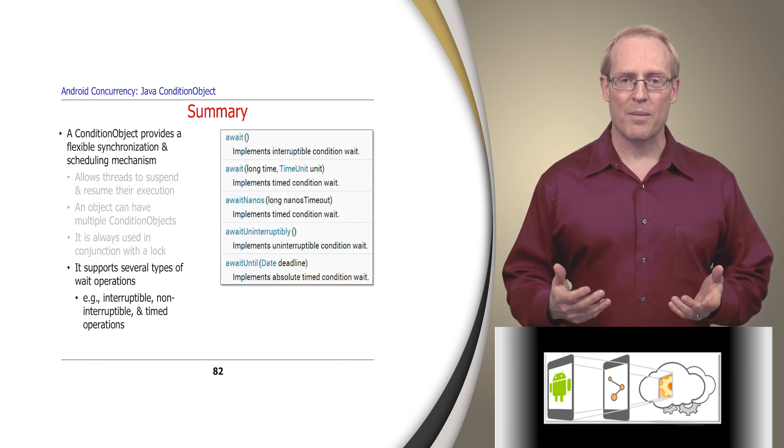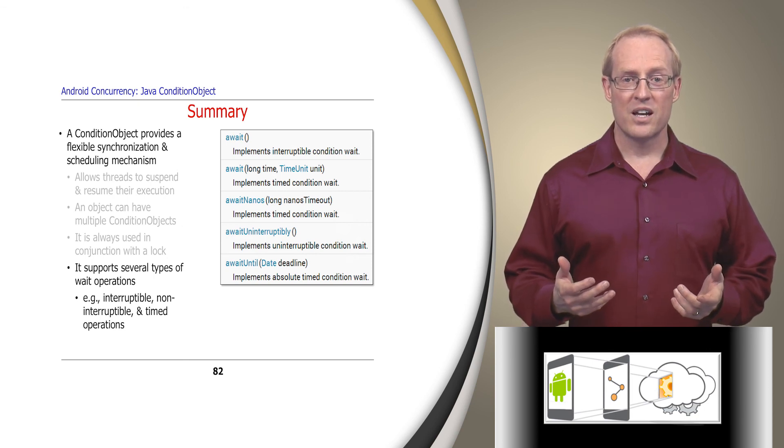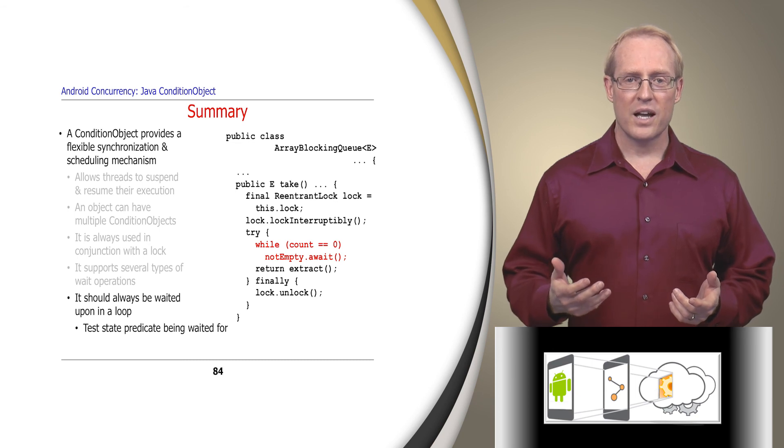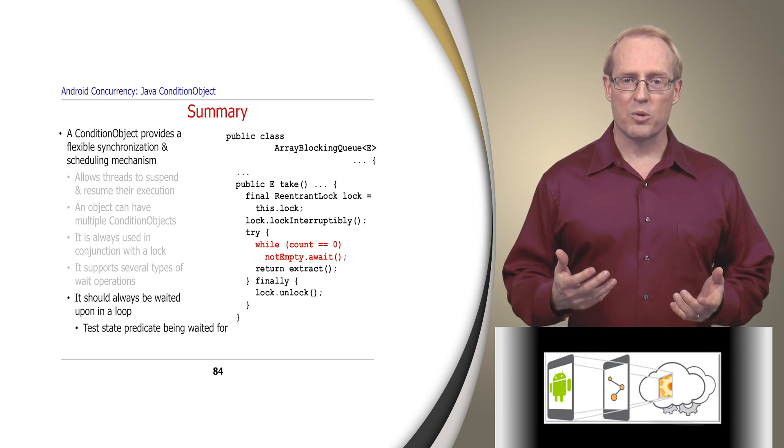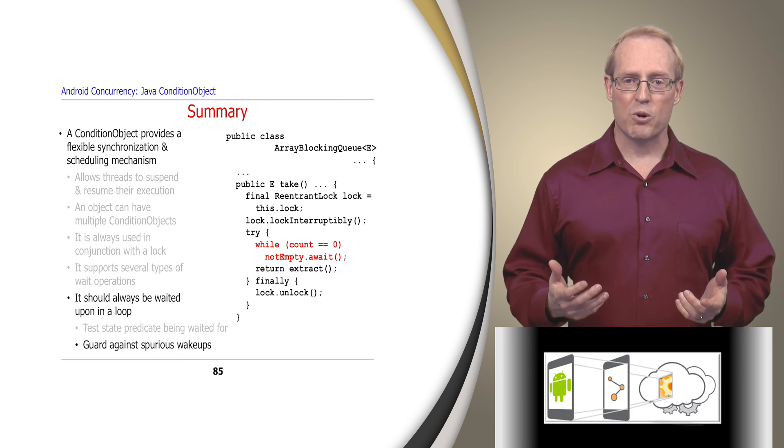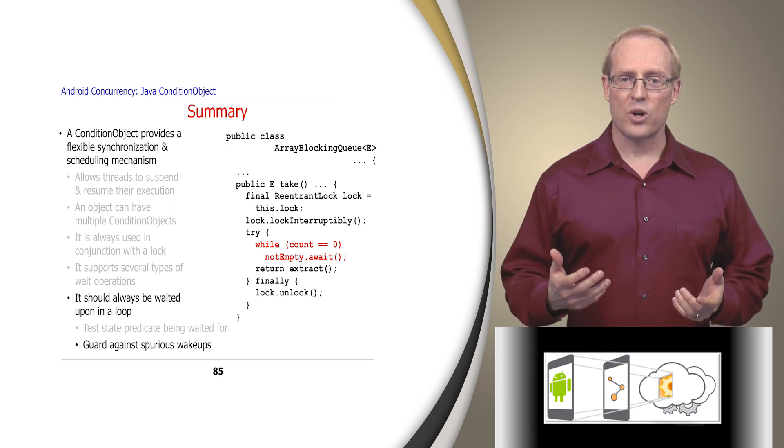A condition object supports several types of wait operations, including interruptible, non-interruptible, and timed waits. A call to wait should almost always be invoked inside of a loop that tests for the condition being waited on, for several reasons. First, a loop is needed since a waiting thread can't assume that a notification it received was for the particular state condition it's waiting on, or that the condition is still true, due to the non-deterministic operations of other threads accessing a conditioned object concurrently. Second, it needs to guard against spurious wake-ups that occur due to quirks of multiprocessor or multi-core systems.